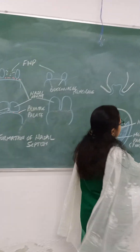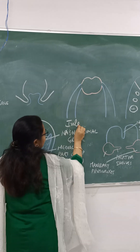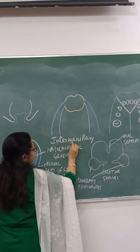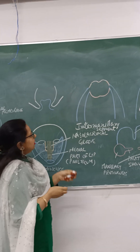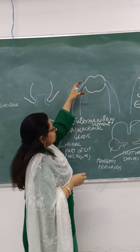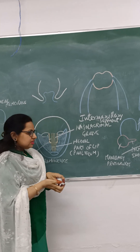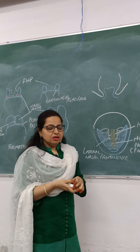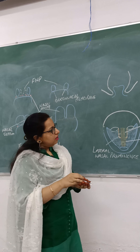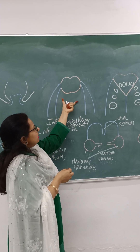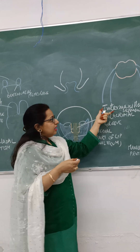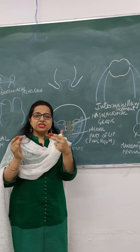For this, you need to know what the intermaxillary segment is. This portion in red is the intermaxillary segment. What happens is, after the medial nasal prominence is fused — not only at the surface but at the deeper level — there is formation of a midline structure known as the intermaxillary segment. As the name suggests, intermaxillary means it is present between the two maxillae.